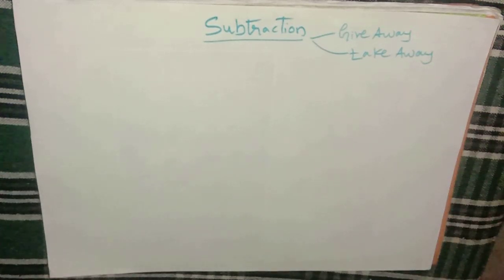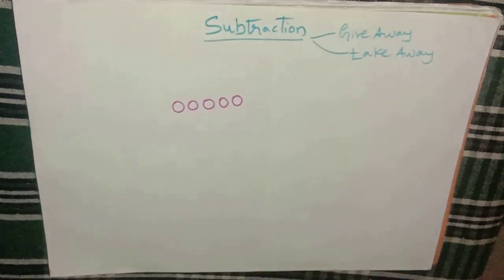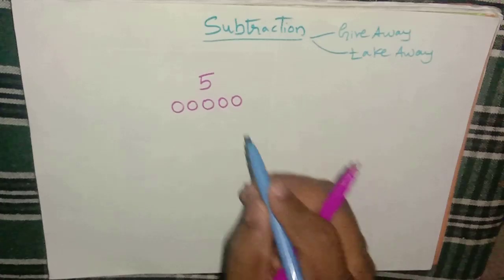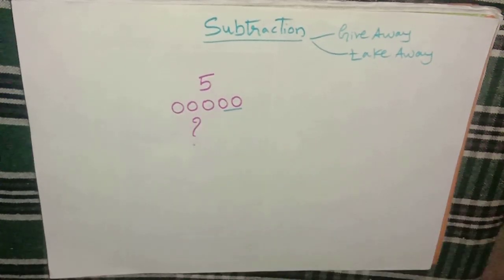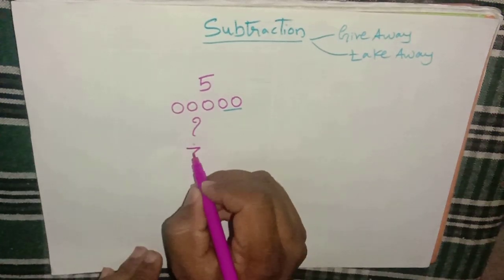So what do we mean by taking away? Let's consider an example. Say you have five balls with you. You give two balls to your friend. Now how many do you have left? Out of five, you gave two balls to your friend, so you are left with three. We are reducing the number from five down to three.